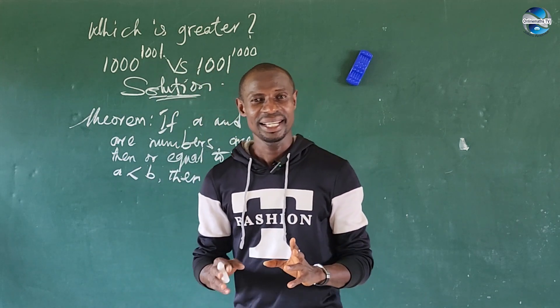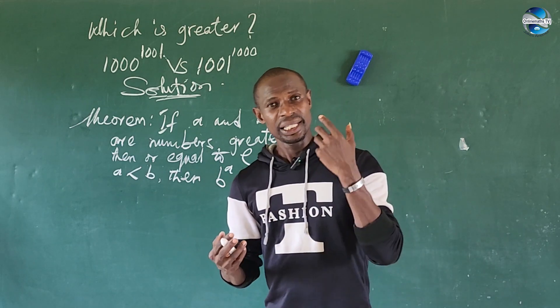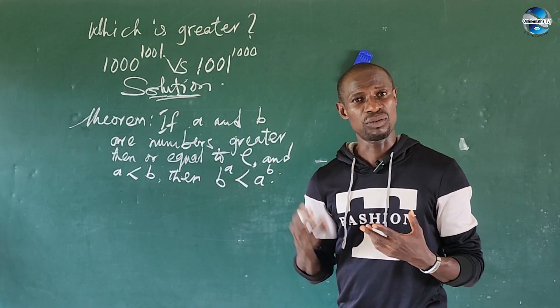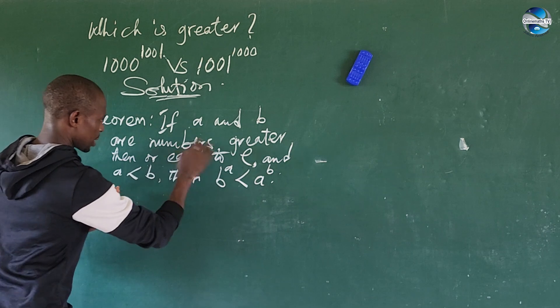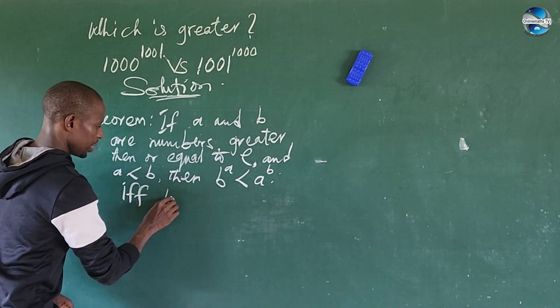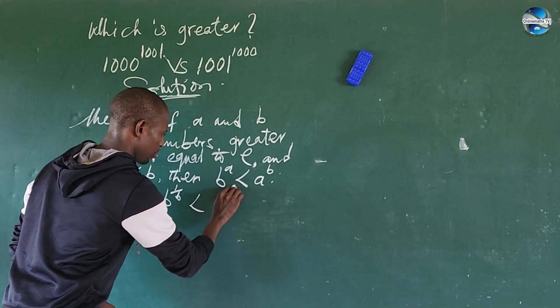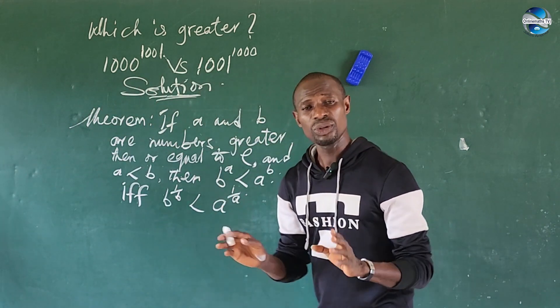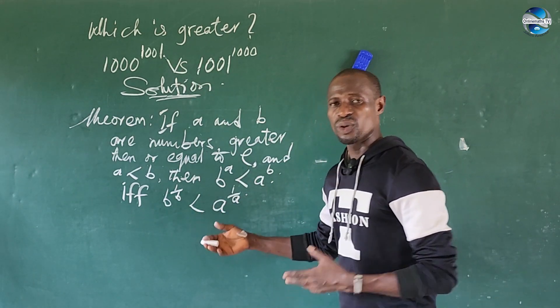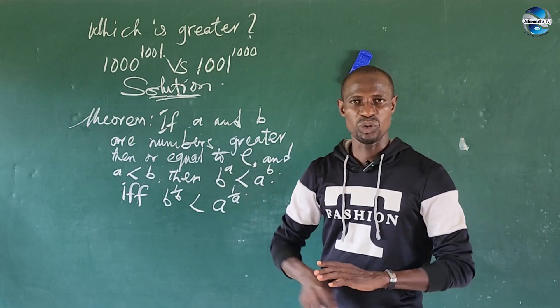So from there, you can see that the answer to this question is playing out already. But there are conditions to this theorem. Okay, this theorem is only true when B to the power of 1 over B is less than A to the power of 1 over A. Okay, so this theorem will hold water if and only if your B to the power of 1 over B is less than your A to the power of 1 over A. Okay, so this is the condition. So do not just jump into the conclusion that, oh, this is now less than this. Is this condition made? So how do we show if this condition is actually correct or made with this expression or this question we have here now?